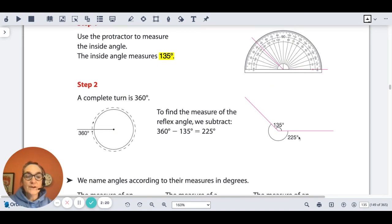To figure out what the opposite angle is to the one that we measured, we do a little bit of simple subtraction. We know there's 360 degrees in a complete turn, and if we subtract the 135 degrees from the opposite angle that we measured, we're left with 225 degrees.